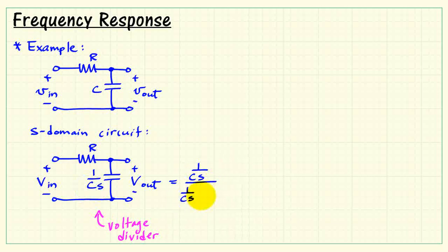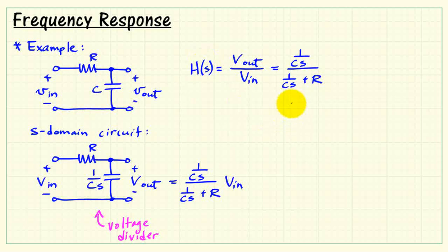Now the circuit we recognize as a voltage divider. We can then write V_out as the impedance of the capacitor divided by the total impedance seen by the voltage source. Let's bring V_in to the other side, and that ratio of output to input is the definition of H of S. So we think of this as being essentially a complex valued gain, output to input.